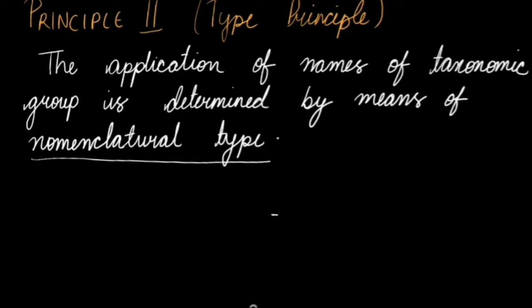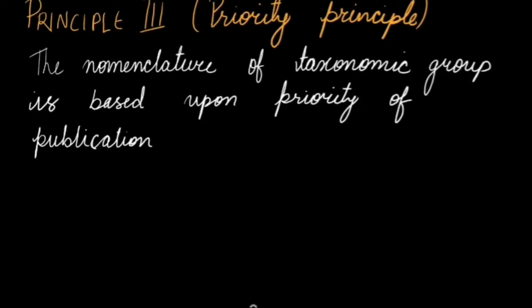Here is a herbarium specimen of Erigeron. This is a holotype of Erigeron. So similar herbarium sheet has to be presented or submitted and that will serve as a nomenclature type. The third principle is called the priority principle.